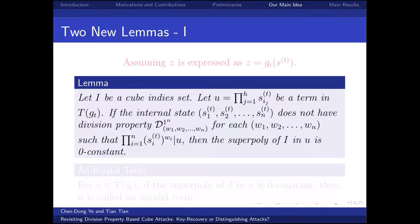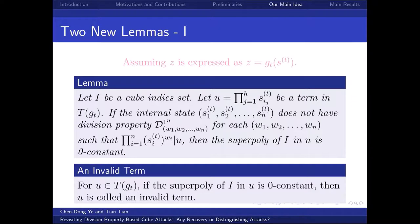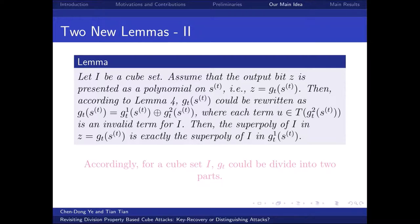Our main idea is expressing z as a polynomial on the initial state iteratively, discarding terms whose superpoly of I is zero-constant in each iteration. Assuming z is expressed as a polynomial on the internal state at time t, for a cube set I, we need to judge whether the superpoly of I in a term u is zero-constant. By analyzing the division property of the internal state at time t, a sufficient condition is given such that the superpoly of I in a term u is zero-constant. Accordingly, we introduce the concept of invalid terms, where the superpoly of I in an invalid term is zero-constant. Based on this, we divide the polynomial g_t into two parts, g_{t,1} and g_{t,2}, where the superpoly of I in g_{t,2} is zero-constant. Hence, we only need to consider g_{t,1}.